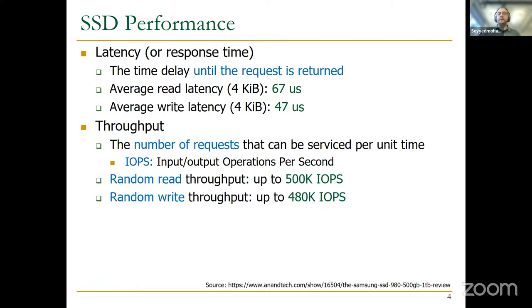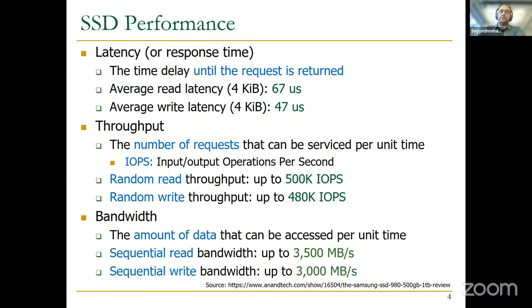We also have the throughput metric — the number of requests serviced per unit time, usually reported as IOPS (input/output operations per second). Random read throughput is up to 500K IOPS and random write throughput is up to 480K IOPS. Bandwidth is another metric — the amount of data accessed per unit time. Sequential read bandwidth can reach up to 3,500 MB/s and sequential write up to 3,000 MB/s.